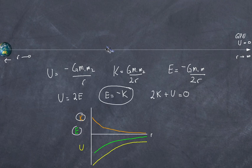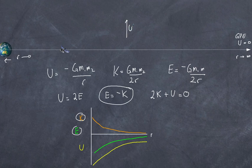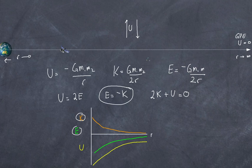Some may ask: shouldn't a loss in kinetic energy exactly equal a gain in gravitational potential energy — conservation of mechanical energy? That holds in a uniform gravitational field. But here, in a varying gravitational field over large distances, that simple relationship does not hold. The key relationship instead is that total energy equals negative Gm1m2 over 2r.